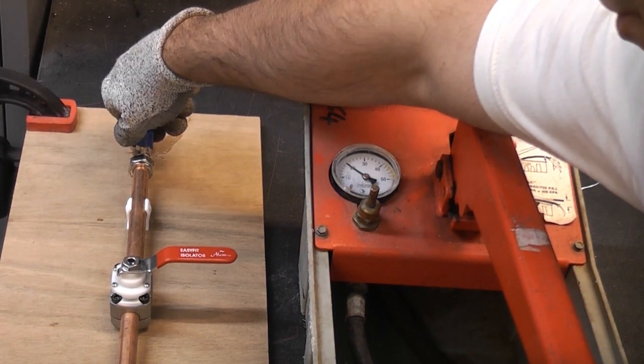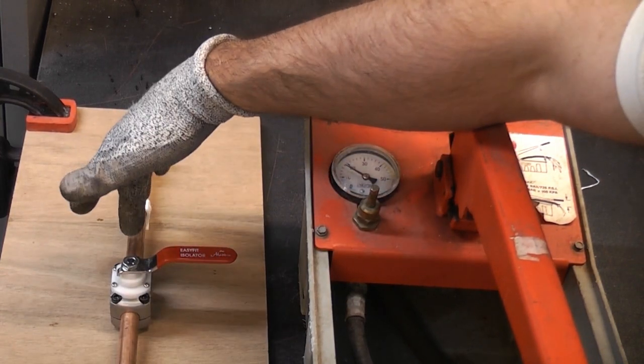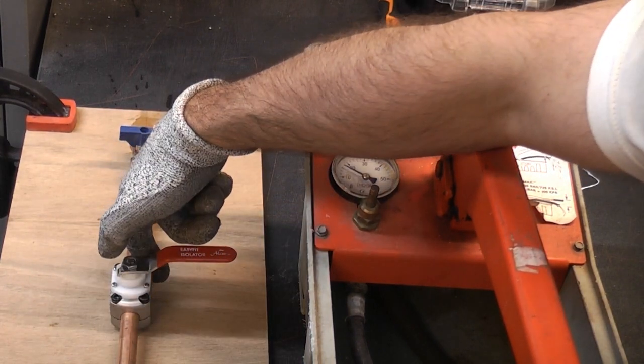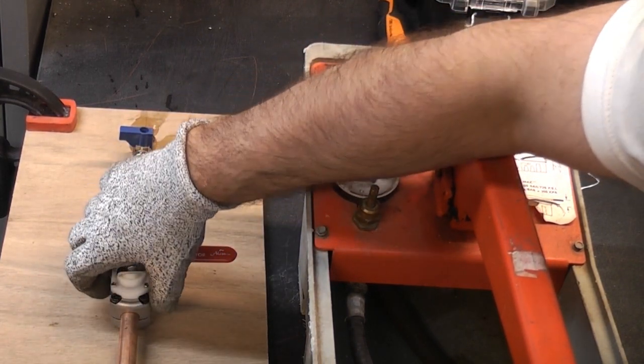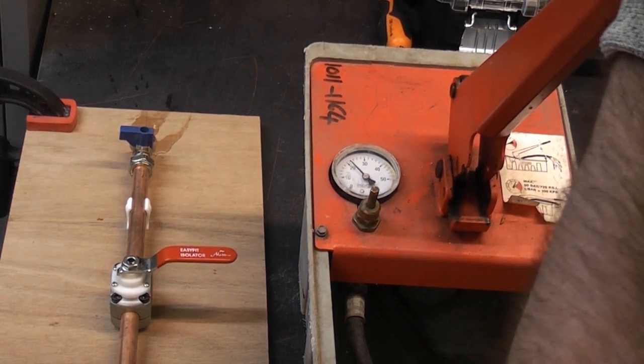What we can do now is close the isolator on the end and we'll just continue pressurizing the pipe. We can test how much pressure the actual fitting itself can take before that starts to leak. So I'll now pressurize the pipe again.